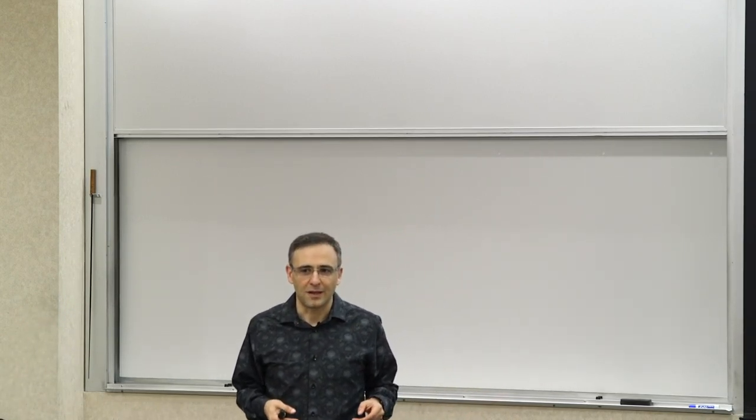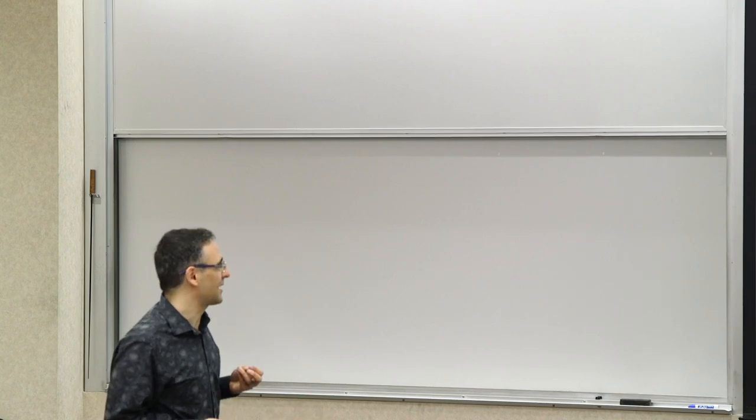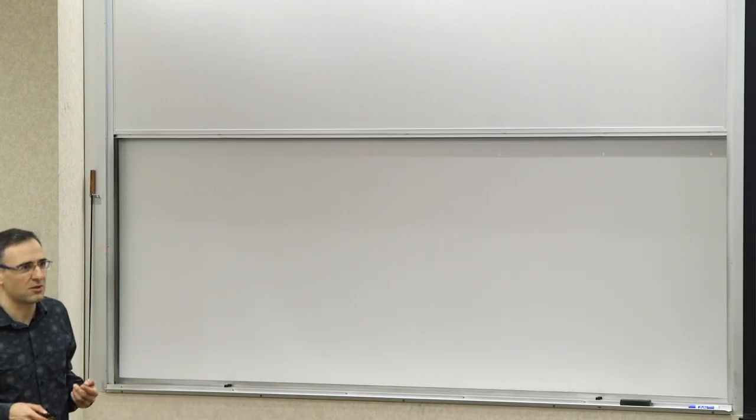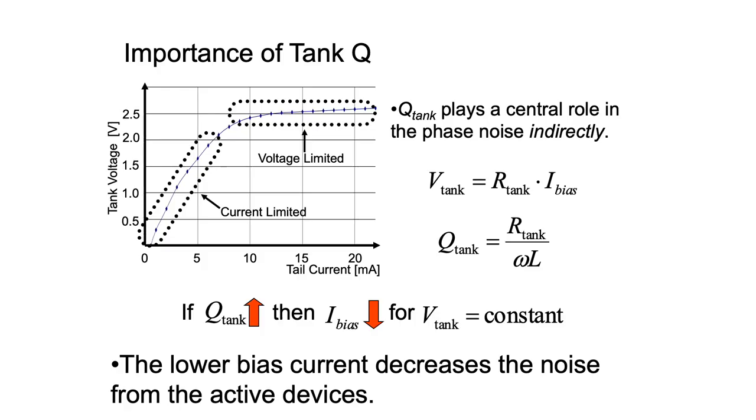So we talked about the oscillator amplitude, and one of the things that we know about oscillators is that oscillators have these different regimes of operation. If you look at the oscillator tank voltage versus the tail current of a typical oscillator, initially you have a region where you don't arrive at startup. If your current is too small, the oscillator simply does not oscillate.